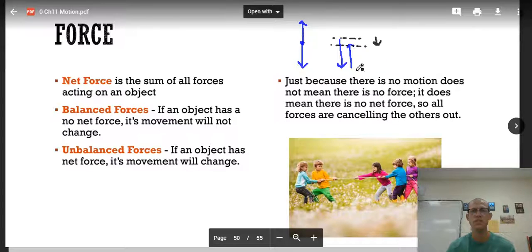This is an example of an unbalanced force. So if an object has a net force, so there is an arrow right here, once you added those two forces together, its movement will change. It's going to accelerate. It's going to fall faster and faster and faster. If we have an unbalanced force, or sorry, if we have a balanced force, that means everything's canceling out and the object's movement will not change.